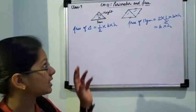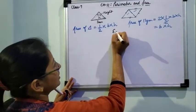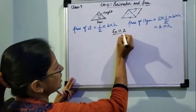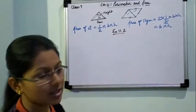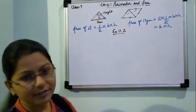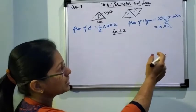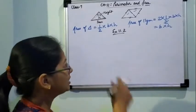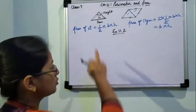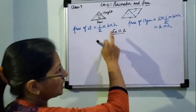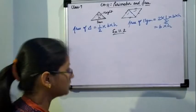This is the basic formula we will be using in Exercise 11.2. We will use only these two formulas: area of triangle = half into base into height, and since a parallelogram has two triangles, the 2 and half cancel out giving area of parallelogram = base into height. Now let's look at some questions.